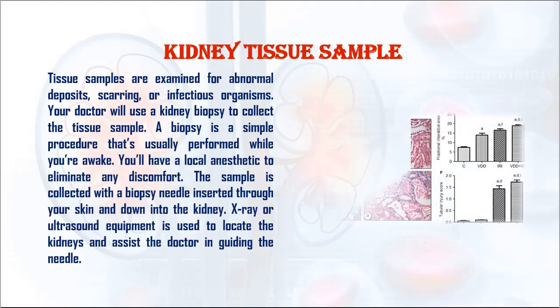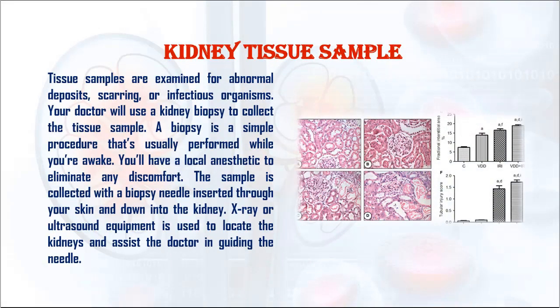Kidney tissue sample: Tissue samples are examined for abnormal deposits, scarring, or infectious organisms. Your doctor will use a kidney biopsy to collect the tissue sample. A biopsy is a simple procedure that's usually performed while you're awake. You'll have a local anesthetic to eliminate any discomfort. The sample is collected with the biopsy needle inserted through your skin and down into the kidney, while X-ray or ultrasound equipment is used to locate the kidneys and guide the needle.